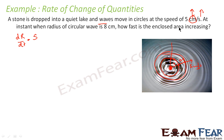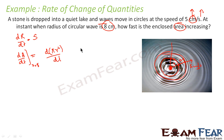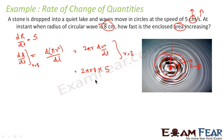The question asks how fast the enclosed area is increasing, so we need dA/dt. Area equals pi r squared, so d(pi r squared)/dt equals 2 pi r times dr/dt, where r equals 8. Putting in the values: 2 pi times 8 times 5 equals 80 pi. The unit is centimeters squared per second.